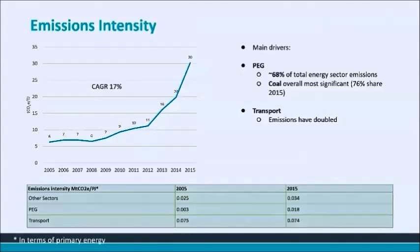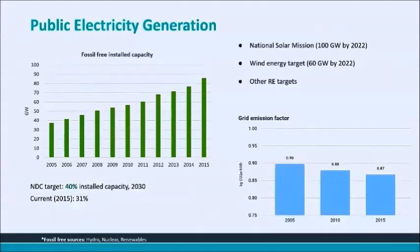Between 2007 and 2011, the share of natural gas consumption increased, so the relative share of coal consumed reduced, but later picked up again after 2012. In the transport sector, greenhouse gas emissions have doubled, but emissions intensity of energy has stayed more or less constant. Our NDC target for fossil-free installed capacity is 40% by 2030. Since 2005, our overall fossil-free installed capacity has increased from 38 gigawatts to 86 gigawatts, and as of 2015 we had achieved about 31% installed capacity. Owing to increased penetration of renewables, fuel shifts, and energy efficiency measures, our grid emission factor has reduced gradually to 0.87 kg CO2 equivalent per kilowatt hour.